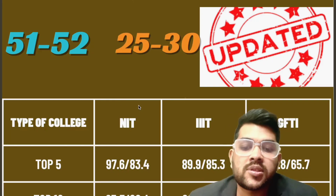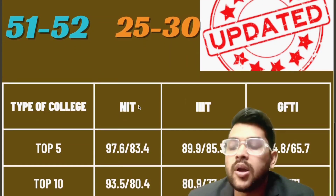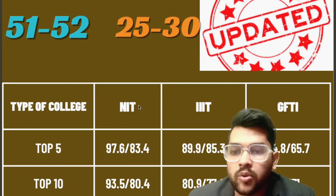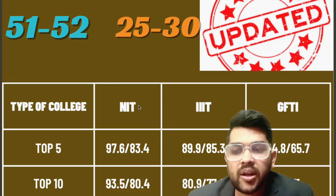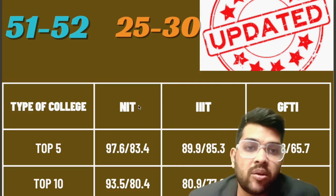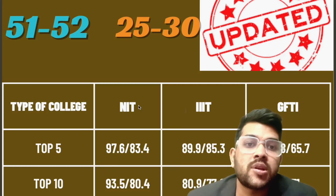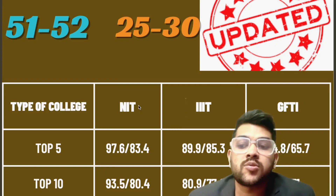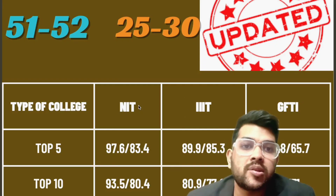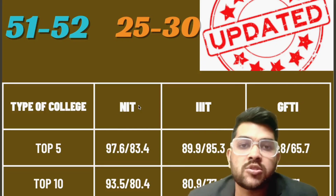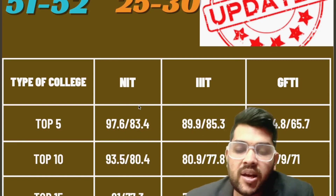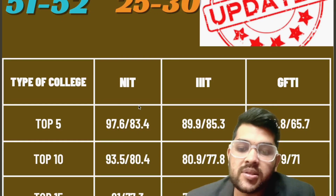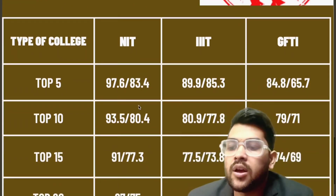For top 5 GFTIs, 84.8 percentile for CSE and 65.7 for lower branches. For top 10 NITs, 93.5 for CSE and 80.4 for lower. For top 10 Triple ITs, 80.9 and 77.8. For top 10 GFTIs, 79 and 71. NITs have huge competition for SC/ST/PwD because there is a 100% tuition fee waiver scheme for SC/ST/PwD students in NITs, but Triple ITs and GFTIs do not have this fee waiver scheme.